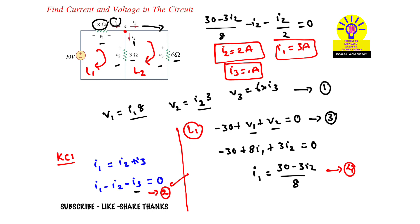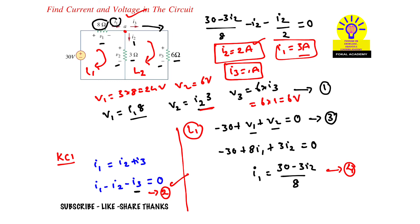Now that we have the currents, substitute i1, i2, and i3 into Equation 1 to find the voltage drops. V1 = 3 × 8 = 24 volts. V2 = 2 × 3 = 6 volts. V3 = 6 × 1 = 6 volts. So V1 = 24V, V2 = 6V, and V3 = 6V.